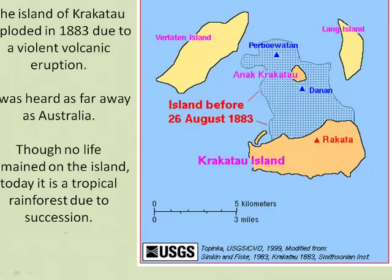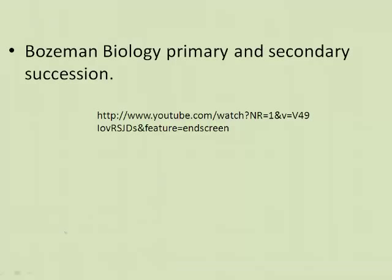One dramatic example of secondary succession occurred on the island of Krakatoa. The whole island essentially blew up in 1883 due to a violent volcanic eruption that could be heard 3,000 miles away and caused tsunamis that circled the earth several times. Though no life remained on the island after the eruption, today it is a tropical rainforest — the result of succession occurring within roughly 130 to 150 years. You can watch a really good video on YouTube about both primary and secondary succession.